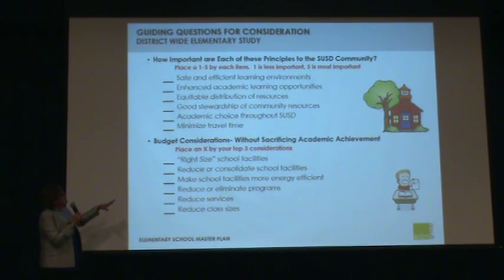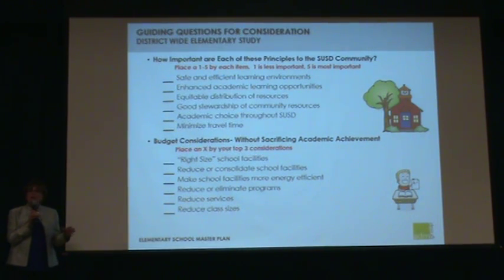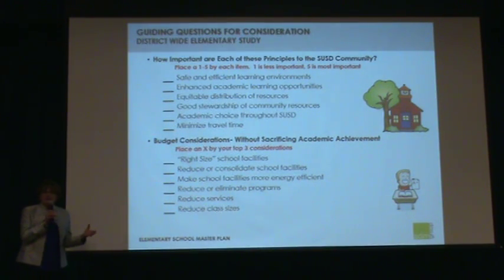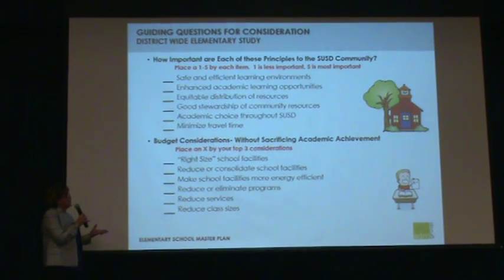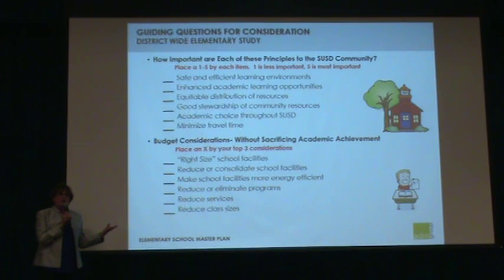The second half of the page asks what are your top three considerations — what is most important to you? Is it right-sizing school facilities? Consolidation of school facilities? Making schools more energy efficient? Or eliminating any kind of school programs? Please put an S by your top three most important considerations.